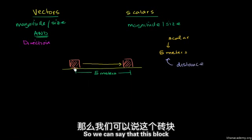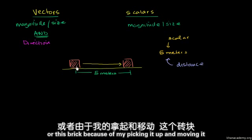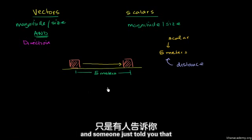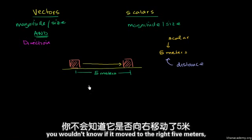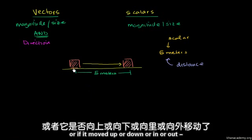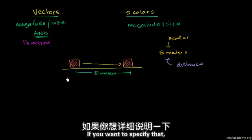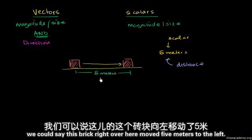So we could say that this brick, because of my picking it up and moving it, has moved a distance of five meters. But if someone just told you it moved a distance of five meters, you wouldn't know if it moved to the right, to the left, up, down, in, or out — you just know it moved five meters. If you want to specify direction, we could say it moved five meters to the right.